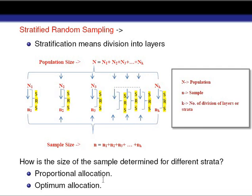In case of optimal allocation there are three conditions. The first condition is that if the sample size n is fixed — meaning we have to collect the data for that given sample size — in that case we will try to minimize the variance of our estimate as much as possible.